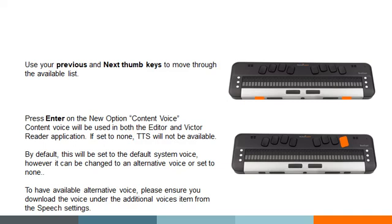If I go into the editor — I'm going to use the new shortcut command of backspace enter with the letter E to move into my editor — I have a sentence written here. I'll come to the top. You'll hear that my voice, because it is set to Will, will now read the content in a different voice than my menus. If I press G with space, which is my read all command: 'This is a test.' We hear Will tell me 'This is a test' as opposed to Sharona. You can have your content voice set to the same as your system voice, but this demonstrates you can disable the content voice or set it to a different TTS engine.